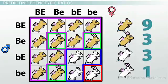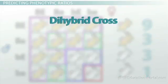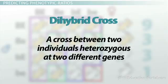This is indicative of a dihybrid cross. A dihybrid cross is simply a cross between two individuals heterozygous at two different genes.